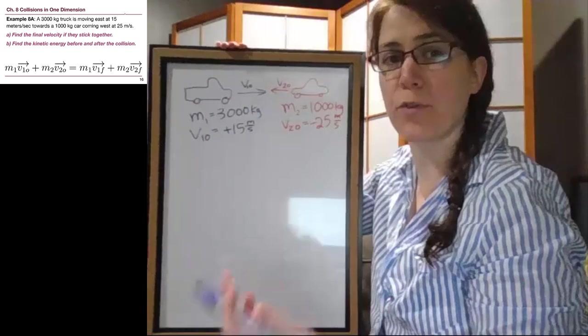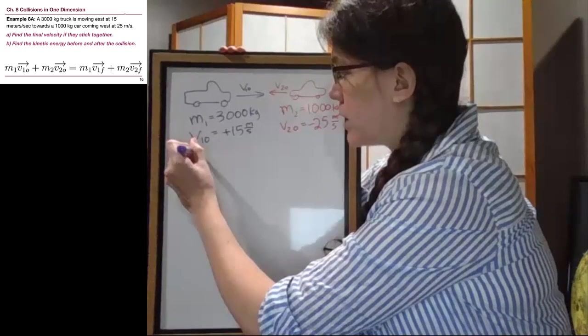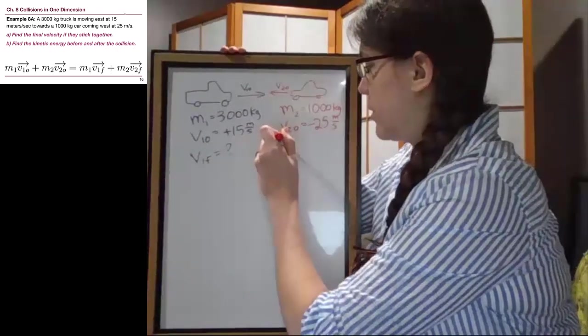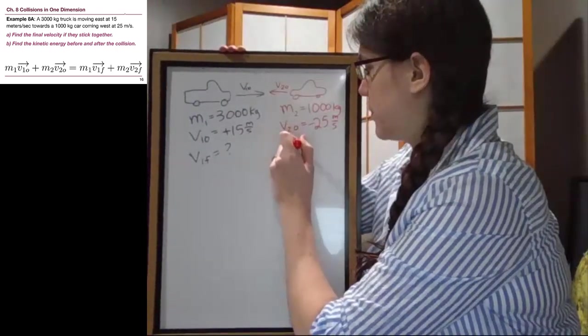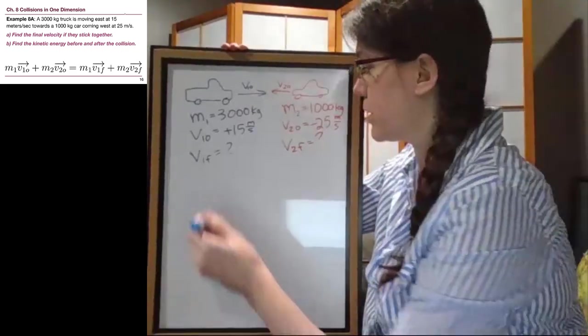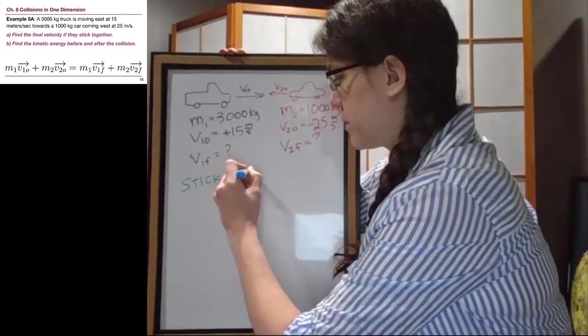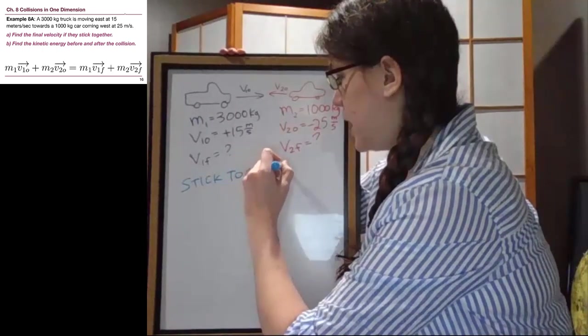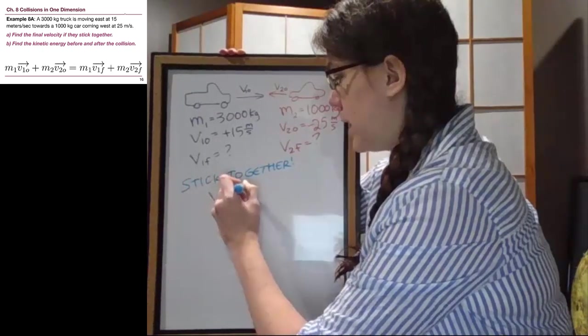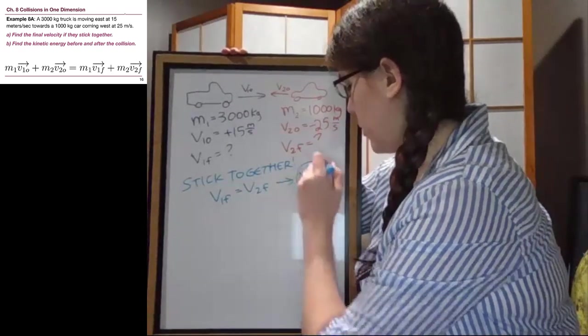So part A asks us to find the final velocity if they stick together. We don't know the final velocity for either object individually. But because they stick together, they have the same final velocity. That means V1 final equals V2 final, which we can call V final. That's our unknown that we're looking for.